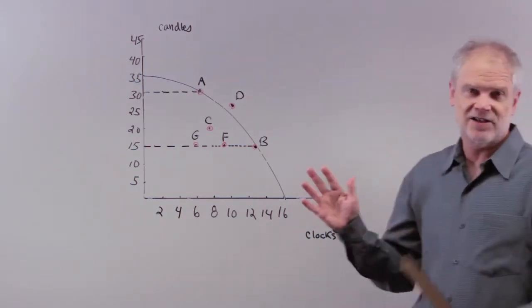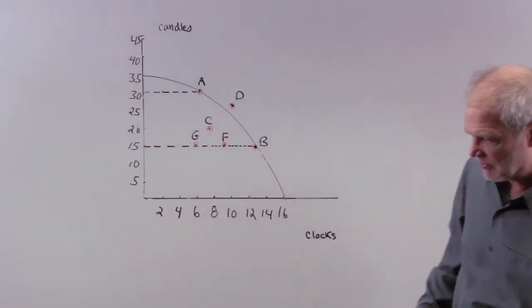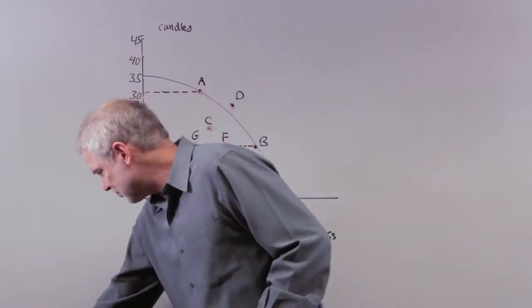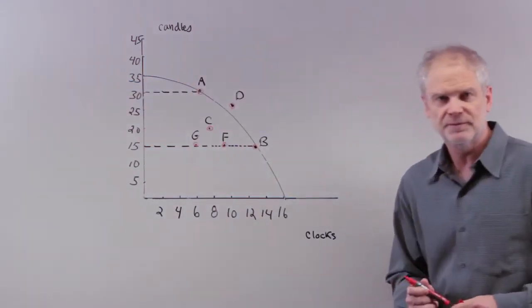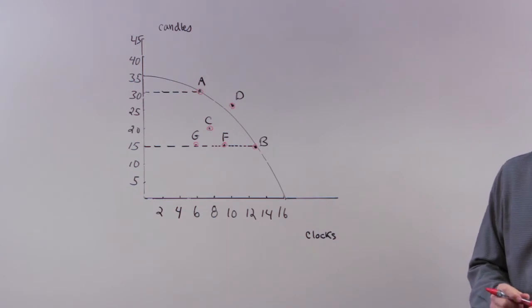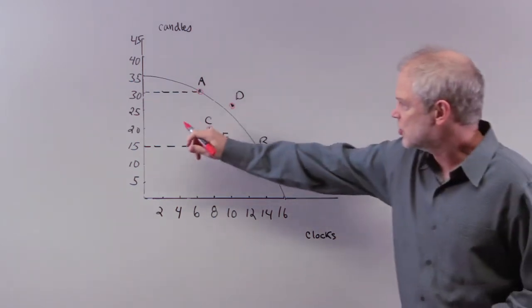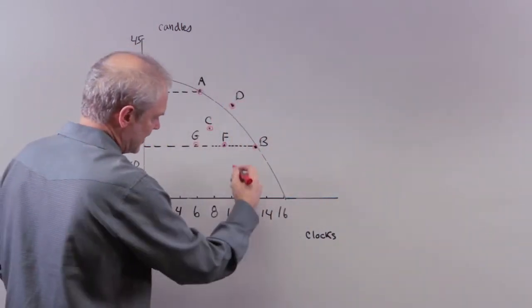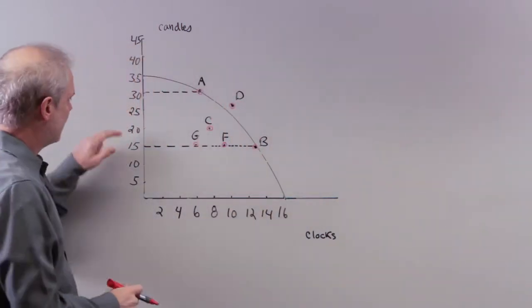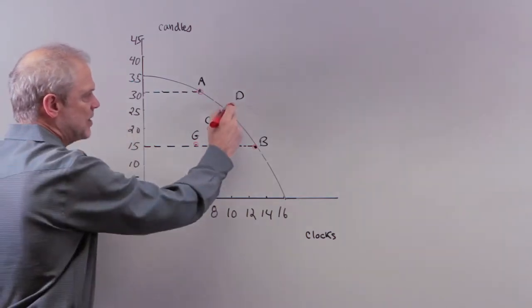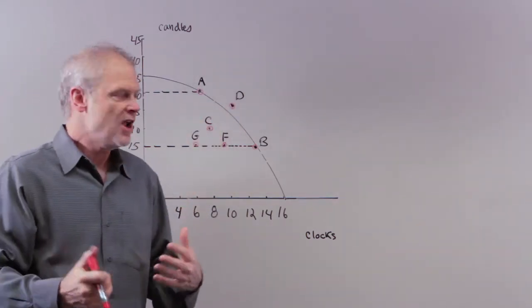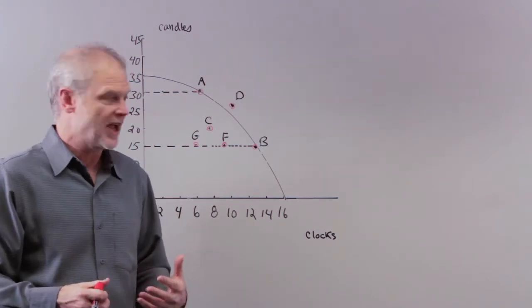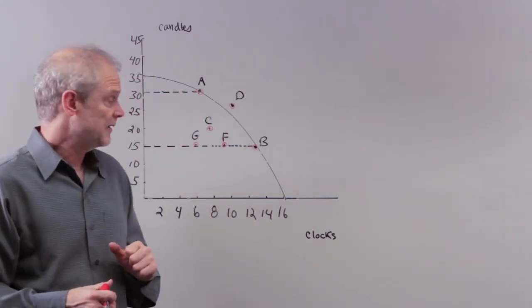So, I could ask a lot more questions about this, and we'll stop here. But let me just present a few. D is unattainable. We haven't got the resources to get there. In other words, you couldn't have, for example, 25 candles and 10 clocks. It's beyond your productive capability. We haven't got the labor, the land, the resources to do that. So, D is inaccessible.